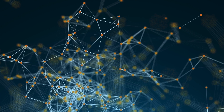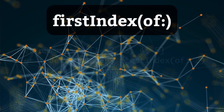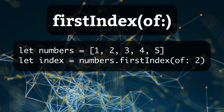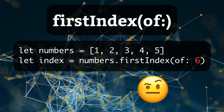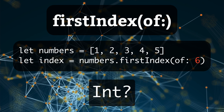For example, previously I showed you the firstIndex(of:) method of arrays, which finds an item in an array. Well, what happens if the item you're looking for doesn't exist in the array? What should Swift return? Now that you've met optionals, you can understand the answer: firstIndex(of:) returns an optional integer with the item's array position if it exists, or nil otherwise.